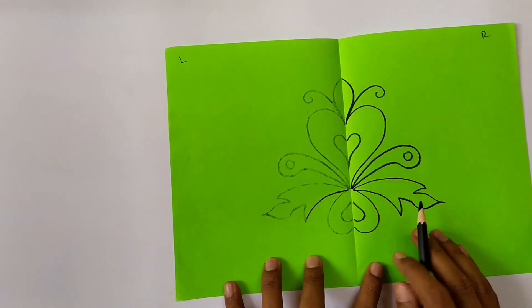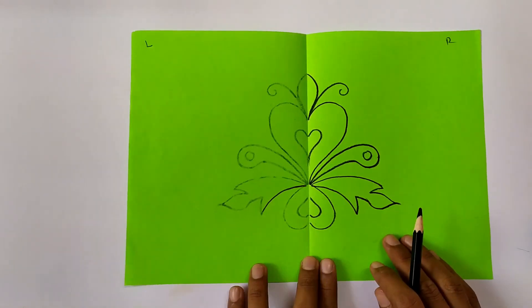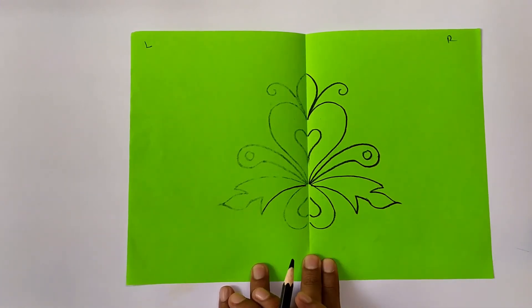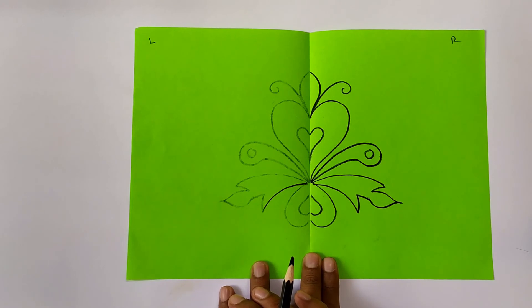This is called one side trace art. Especially it is very useful in the science diagrams which have the symmetry. Okay, hope you enjoyed and stay tuned to handmade happiness. Thank you.